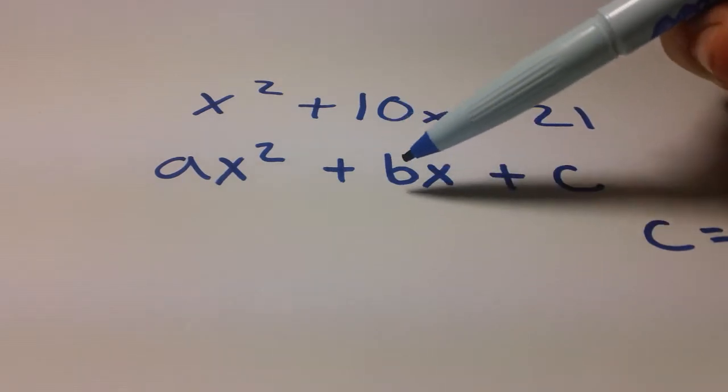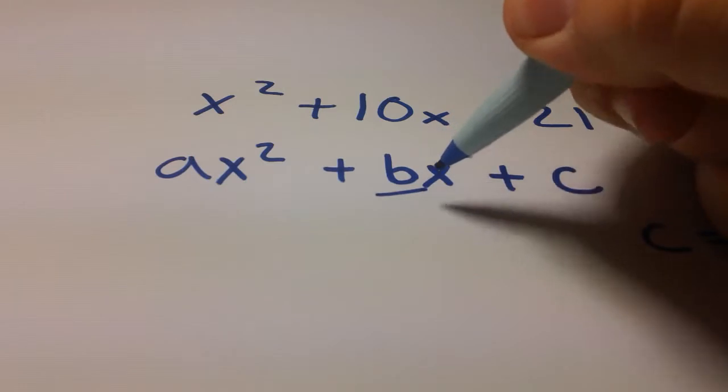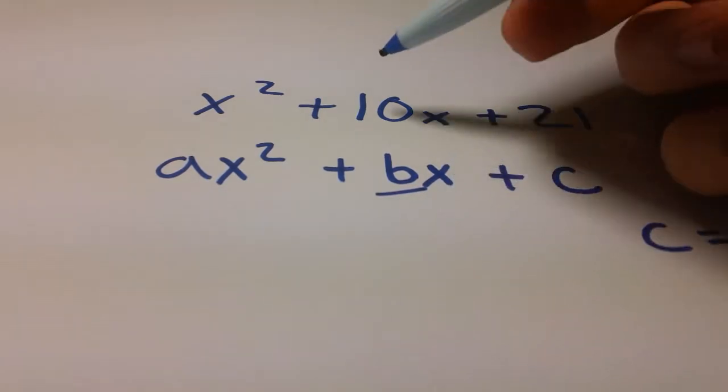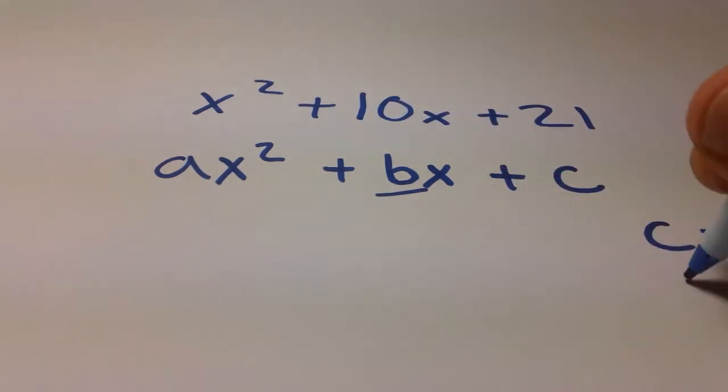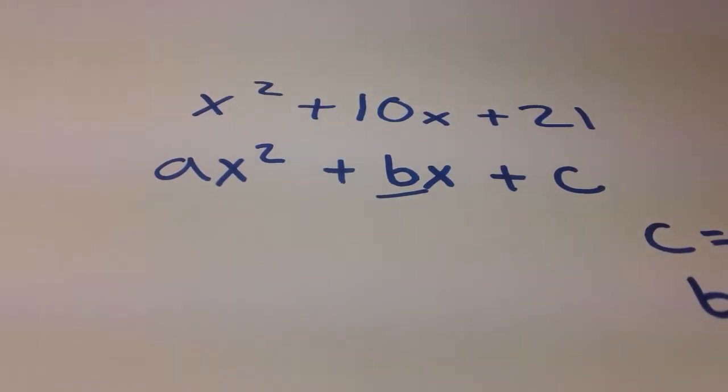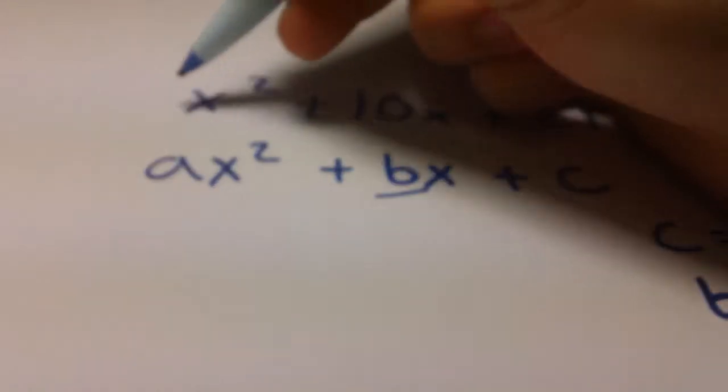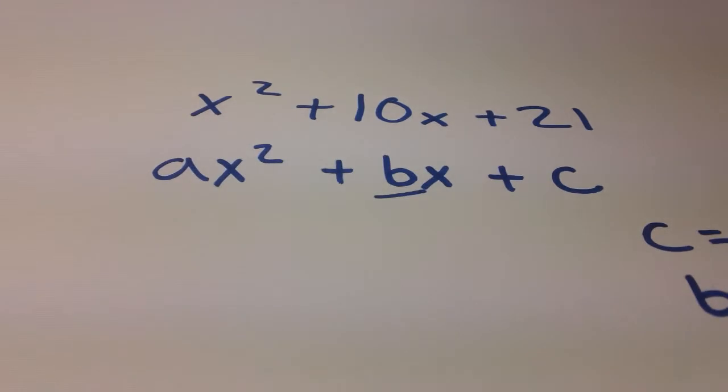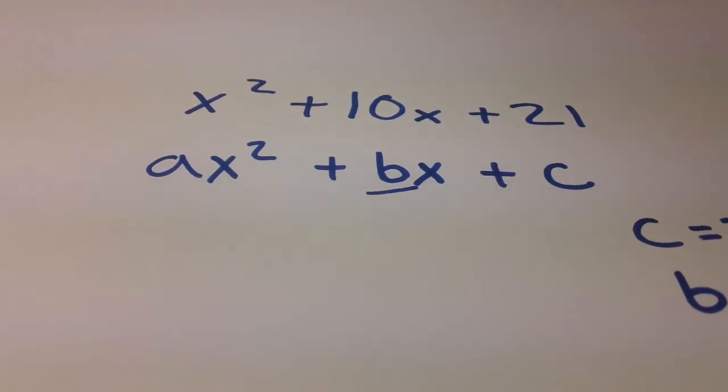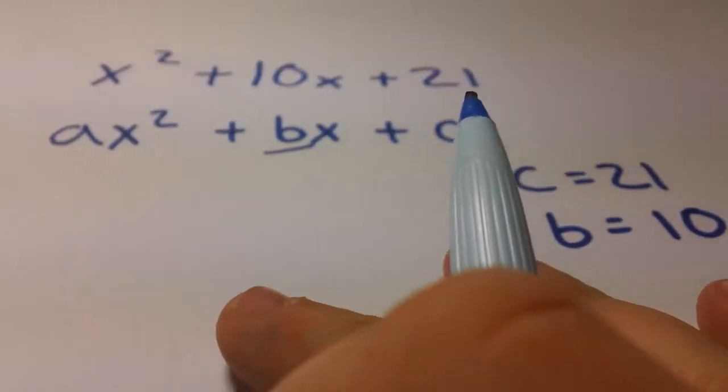This b is representing the term that is a coefficient before our x to the first power. And in this case, that is going to be 10 right here. The one I've often seen my students struggle with just because it's kind of invisible is a. You look up here in our equation and you just see x squared. There's not anything in front of there. I've seen way too many times people saying, oh well, that means a equals 0, right? Because there's not an a. But that's not quite what it is.